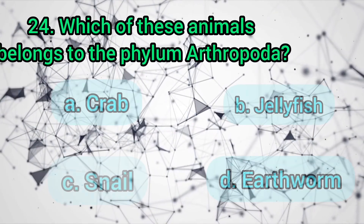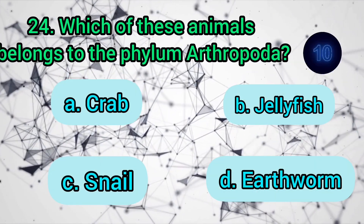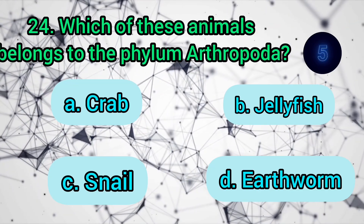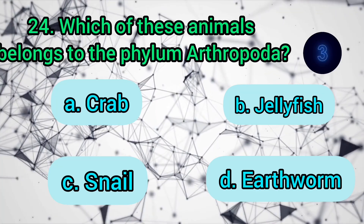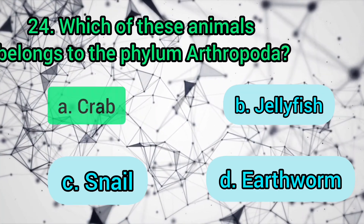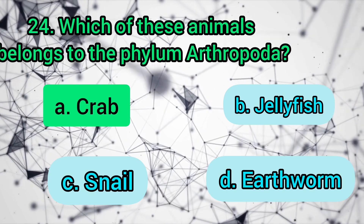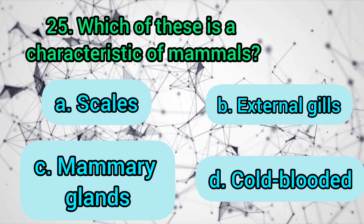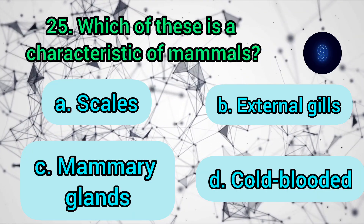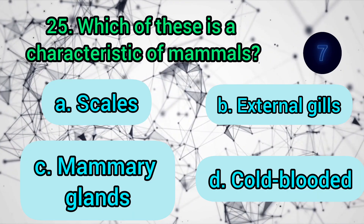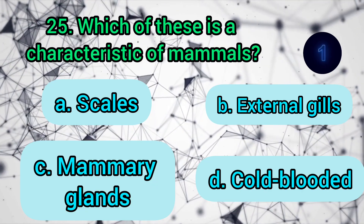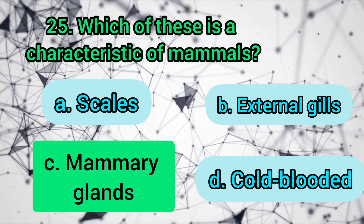Which of these animals belongs to the phylum Arthropoda? Crab, jellyfish, snail, or earthworm? The answer is: crab. Which of these is a characteristic of mammals? Scales, external gills, mammary glands, or cold-blooded? The answer is: mammary glands.